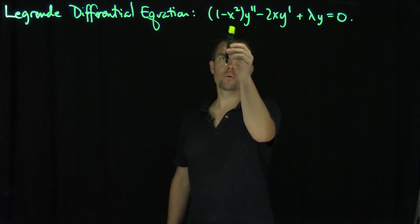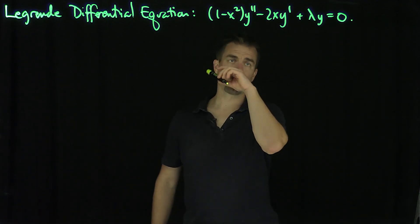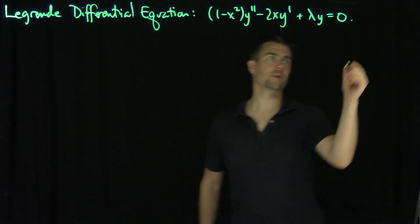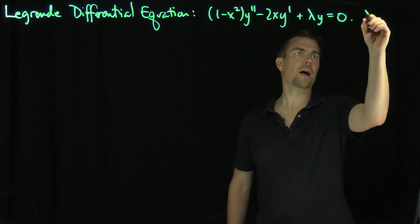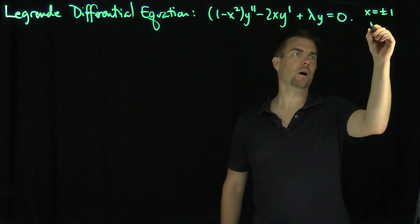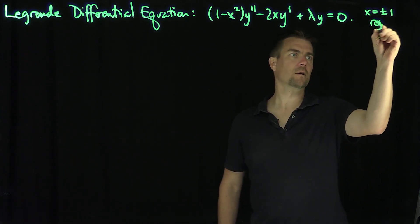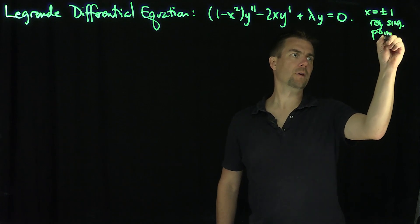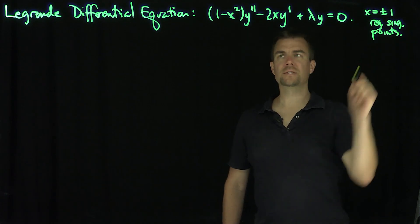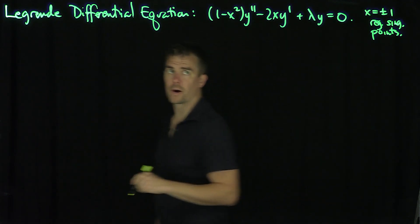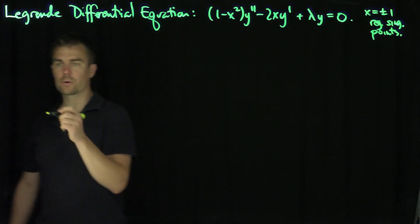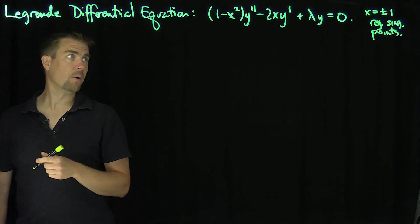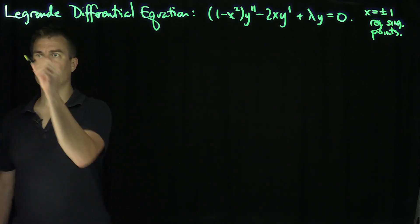We can see here that both 1 and negative 1 are regular singular points for this differential equation. Note that x = ±1 are regular singular points, but x = 0 is actually an ordinary point. So 0 is an ordinary point, and I'm going to find the solution around x = 0.